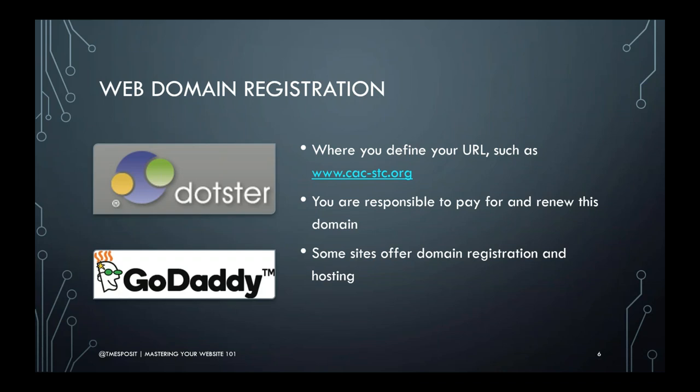The first item is web domain registration — this is where you define the URL. Using the CAC website as an example, the URL is www.cac.hcc.org. You need to pay someone to give you ownership rights to that URL and renew it every year or via a multi-year package. If you don't pay to renew it, someone else may claim it. Some sites offer both domain registration and web hosting — popular ones include GoDaddy. Web domain registration is usually around $8 to $10.